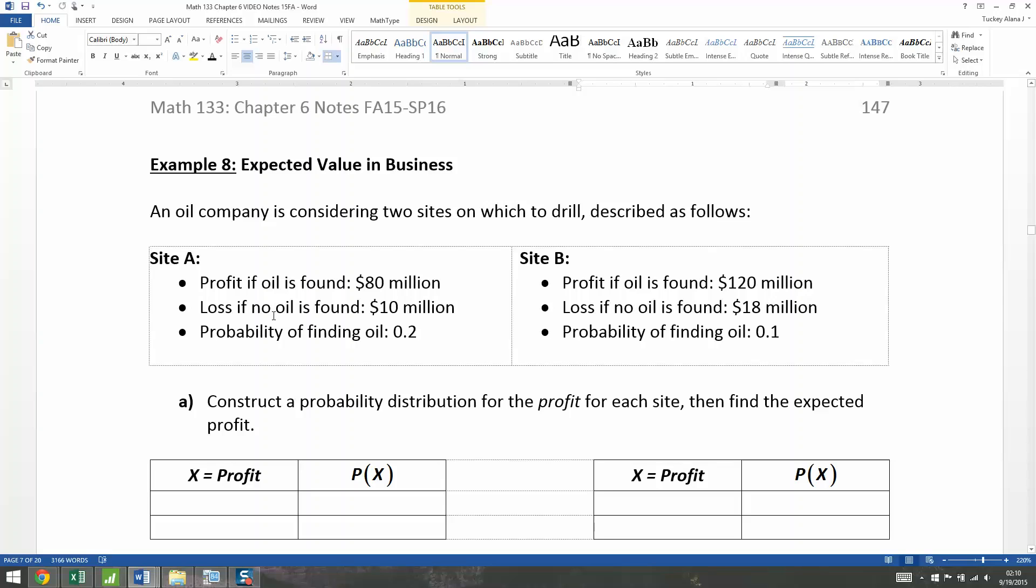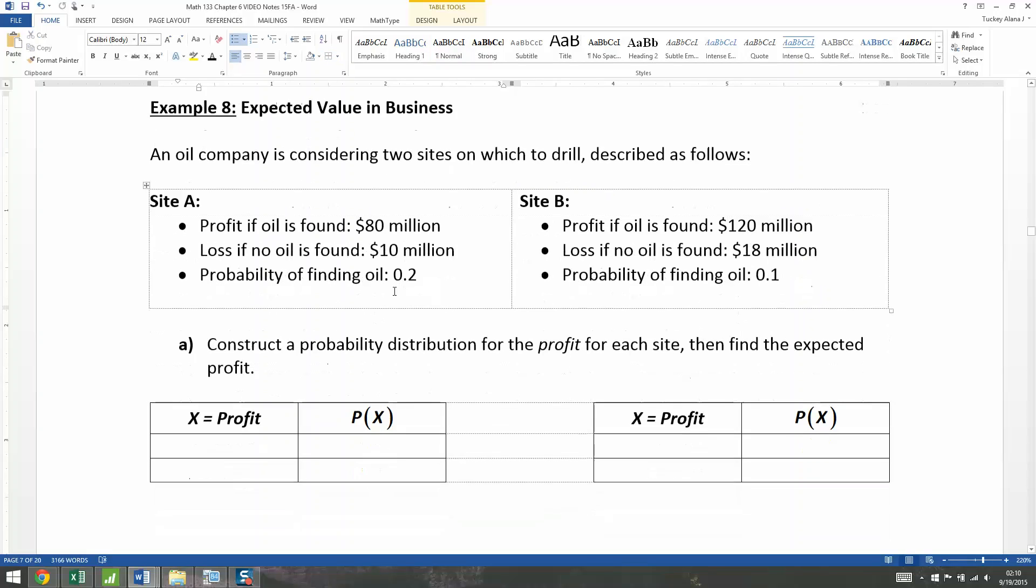So an oil company is considering two sites on which to drill, site A and site B. These sites have different profit and loss potential. So the profit on site A is $80 million if they find oil, but they lose $10 million if they don't find oil. And the probability of finding oil is 0.2.